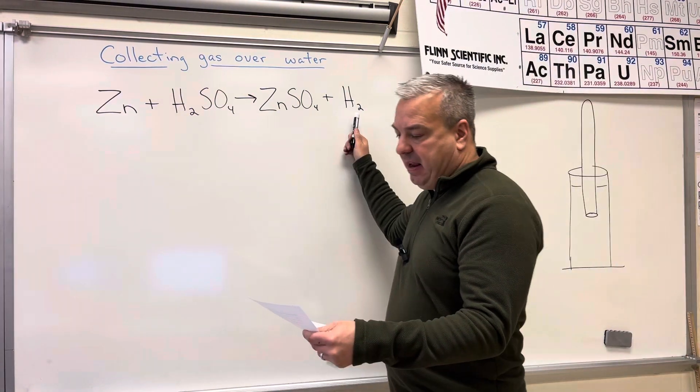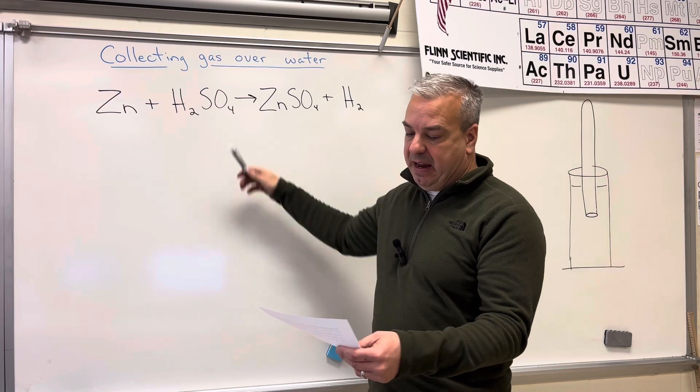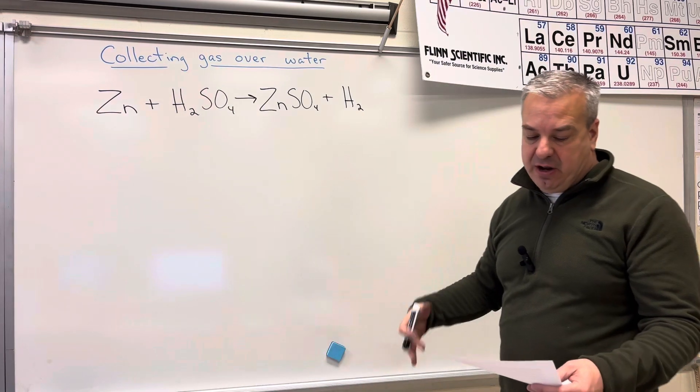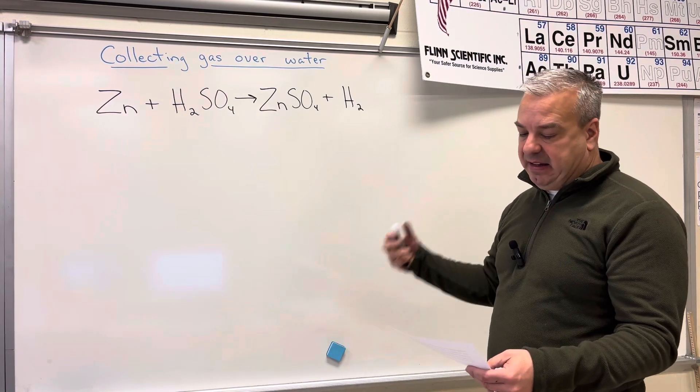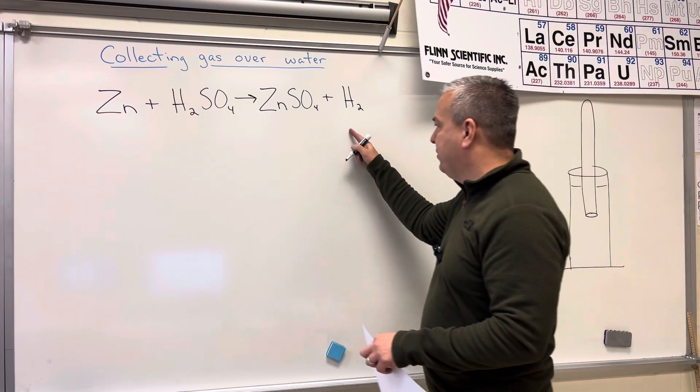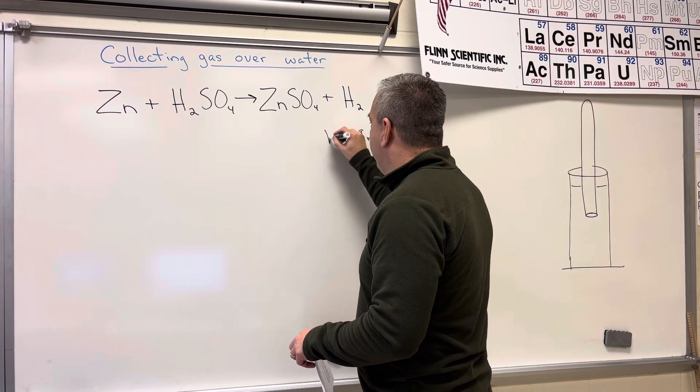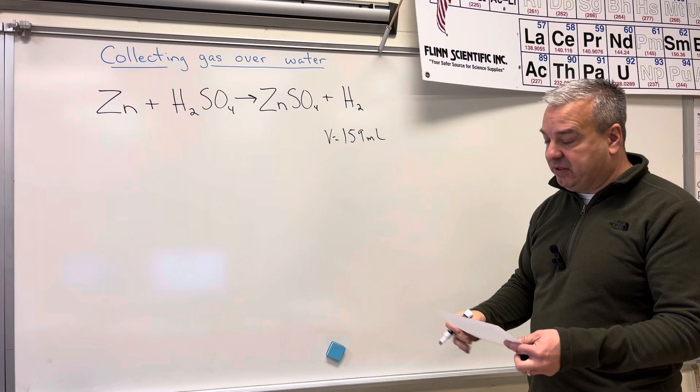It says hydrogen gas is produced when zinc reacts with sulfuric acid, and it gives us some information about the hydrogen. It says if 159 milliliters of wet hydrogen, so 159 milliliters is a volume reference because the unit is milliliters.